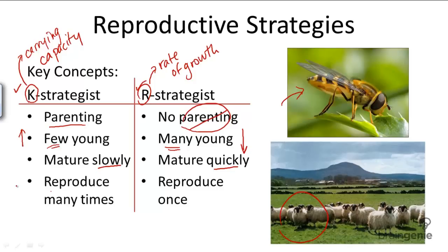Both R- and K-strategists have developed under different life history conditions and fit the needs of the organisms.